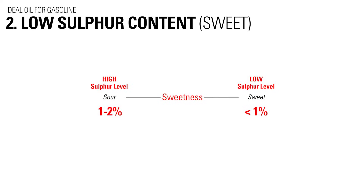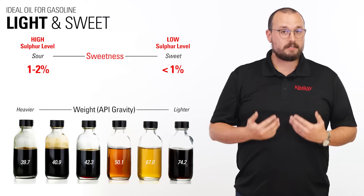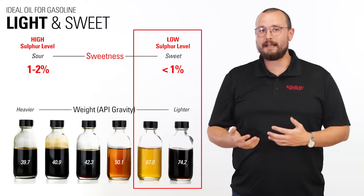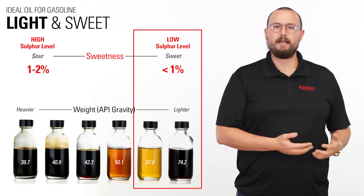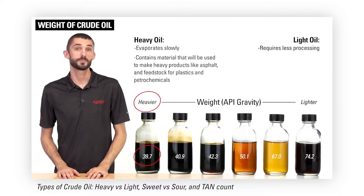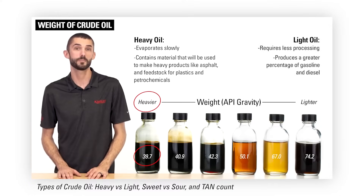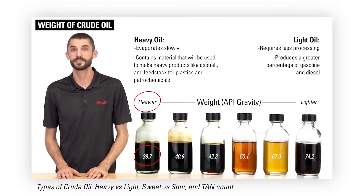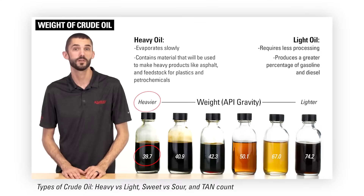The second characteristic is low sulfur content. All crude oil contains some level of sulfur. Oil that's lower in sulfur is called sweet oil, and oil that's higher in sulfur is called sour oil. The most desired crude oil is both light and sweet. In another video, Kyle showed us how different types of oil are classified — check out that video in the description below.